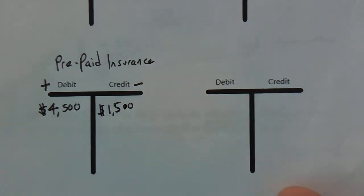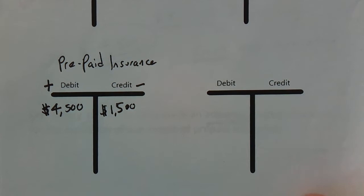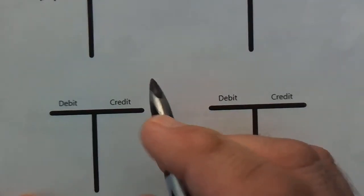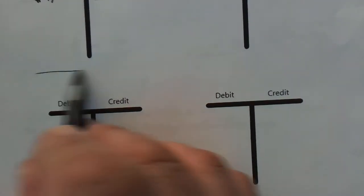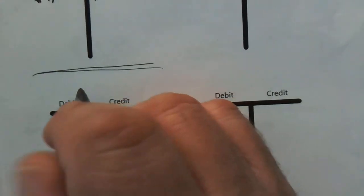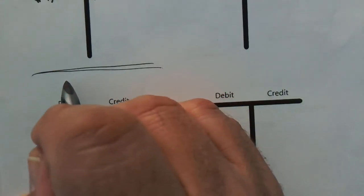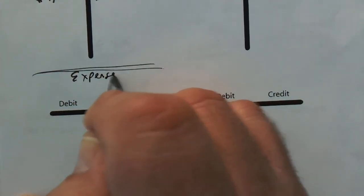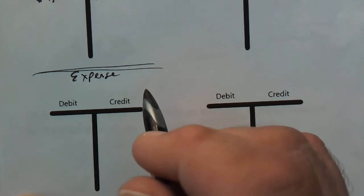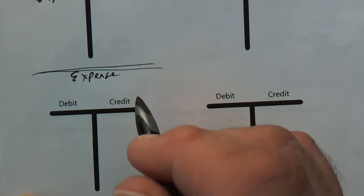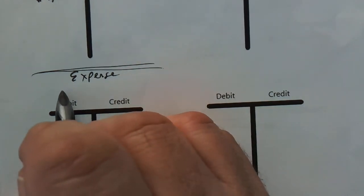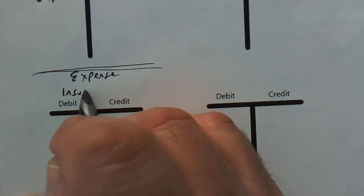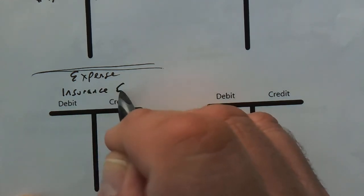What is that going to be? At this point, we're actually expensing it because it's been used. So this is not an asset anymore — this is now an expense. We're looking at the expense portion of our books, and we have one called insurance expense.